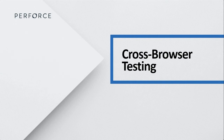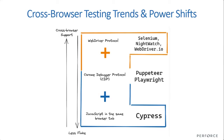Let's start today's session with cross-browser testing, then we'll move to mobile test automation. When you look at the cross-browser testing landscape today, it's divided into three methods and architectures where you can see the placements of different test automation frameworks. On the upper level, there are the WebDriver protocol-based frameworks — mentioning just a few: Selenium, Nightwatch, WebDriver.io — but there are obviously others that are based on WebDriver.